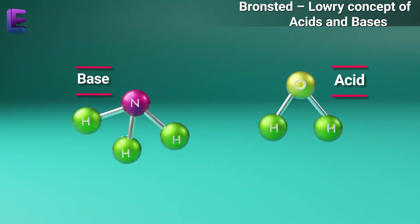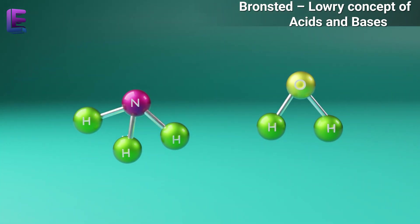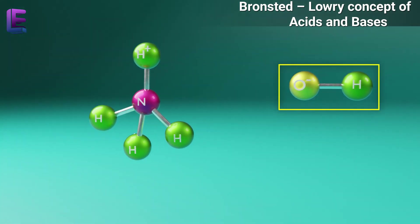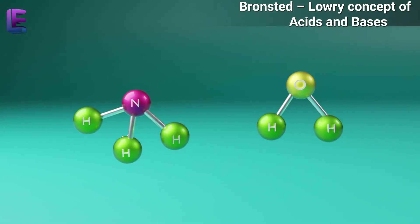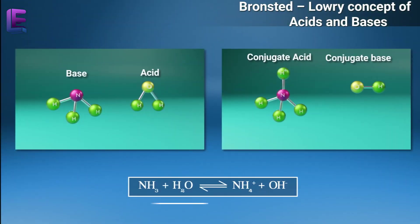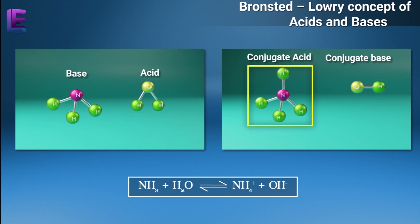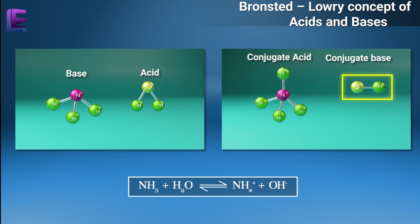The acid-base pair that is differentiated by only a single proton is called a conjugate acid-base pair. The conjugate base of the acid H2O is OH-minus. The conjugate acid of the base NH3 is NH4-plus. If the Bronsted-acid is strong, its conjugate base is weak. If the Bronsted-base is strong, its conjugate acid is weak. A conjugate acid has one extra proton, while a conjugate base has one less proton.